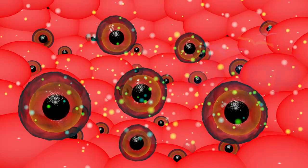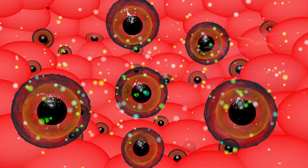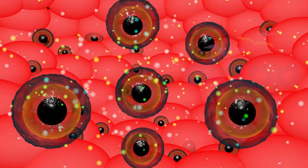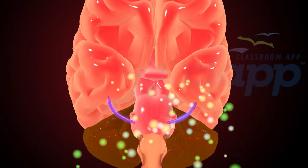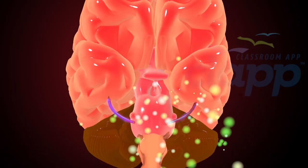If the follicle does not ovulate, a corpus luteum is not created, and without a corpus luteum, there is no surge in progesterone. The lack of progesterone leads to a higher pulse frequency seen in PCOS.